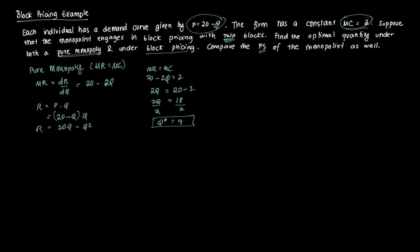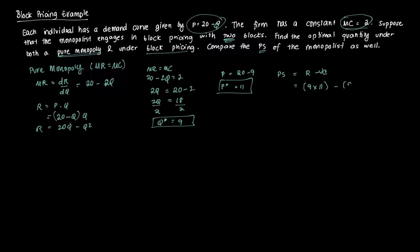To get P, we plug Q* into the demand function: P = 20 minus 9, so P* = 11. Then producer surplus equals revenue less variable cost: that's 9 times 11 minus 9 times 2, which equals 99 minus 18, equal to 81. So producer surplus under pure monopoly is 81.